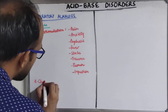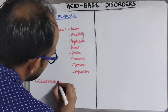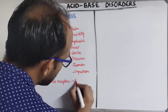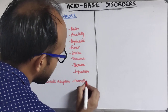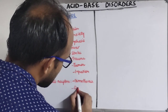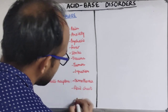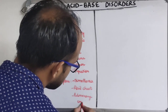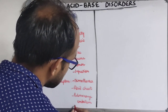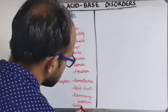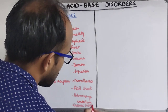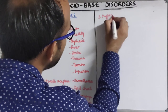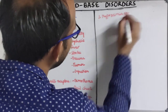If there is stimulation of chest wall receptors, that will also increase the ventilatory drive. Causes include hemothorax, flail chest, pulmonary embolism, and cardiac failure.